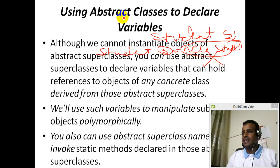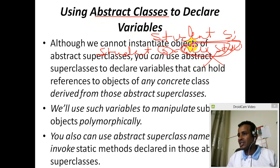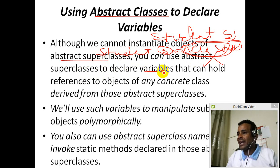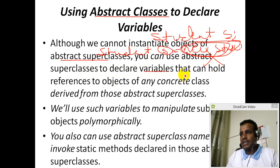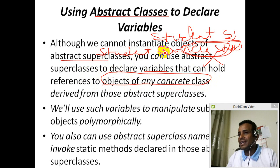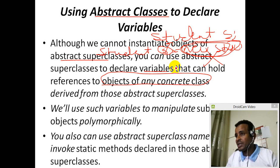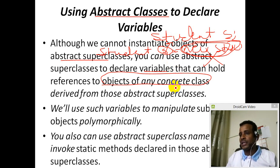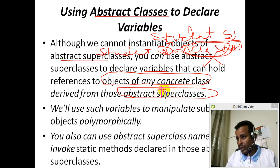The abstract class variable can hold references, but we cannot instantiate an object of an abstract superclass just like this. You can use abstract superclasses to declare variables. That variable can hold references to objects of any concrete class. My class is different from that abstract superclass — you can use the type of the superclass.